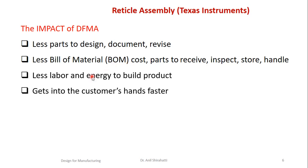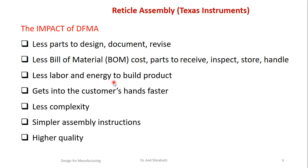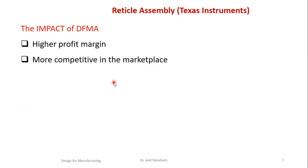There is less labor and energy to build the product. The product gets to the customer faster because it is faster to manufacture and assemble. Complexity is heavily reduced, which decreases assembly and manufacturing time with simpler assembly instructions, and quality is improved significantly. Overall cost reduction leads to higher profit margins and more competitive positioning in the market, as both cost and time to manufacture are reduced heavily.